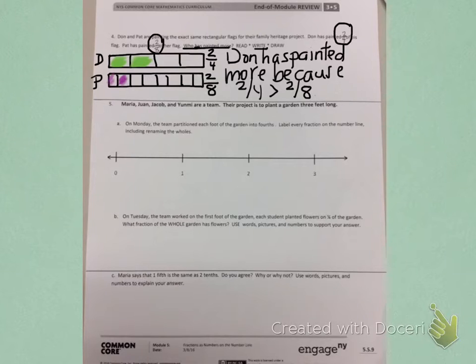So, the whole numbers I see underneath are each foot of the garden. So, between zero feet and one foot, they partitioned into fourths. So, I'll break that apart into fourths. Then, between one foot and two feet, again, they partitioned into fourths. Between two feet and three feet, they partitioned into fourths.